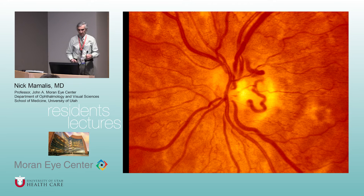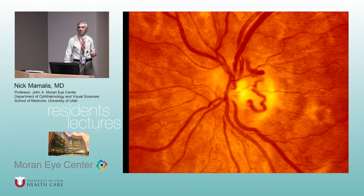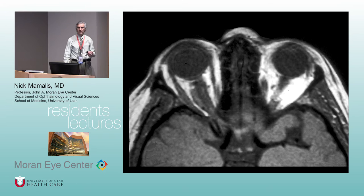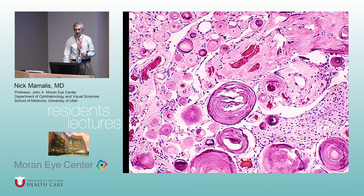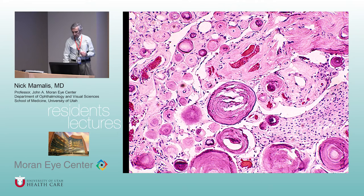Optic nerve meningioma: the triad — Spencer's triad — is optociliary shunt, optic atrophy, and optic nerve meningioma. The classic MRI finding is a tram track sign, with the tumor in the middle and enhancement on either side. Classic pathologic finding: psammoma bodies — little concentric calcific bodies forming in the meningioma.